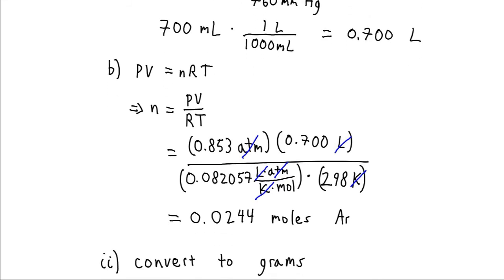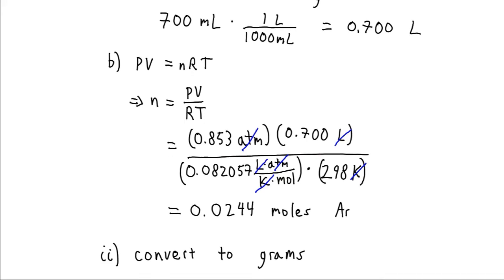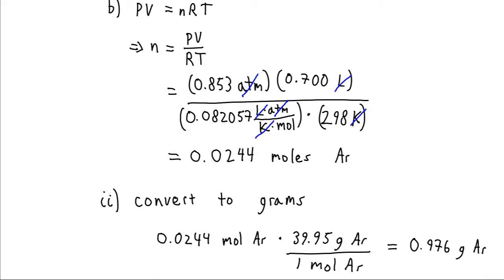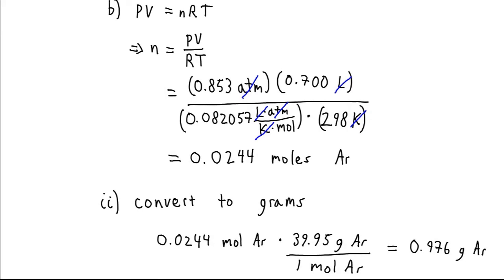Our last step: we usually like to express quantities in mass, since that's what we can actually measure. We multiply our 0.0244 moles by the atomic weight of argon from the periodic table, which is 39.95 grams per mole. Moles cancels and we get 0.976 grams of argon. So in this entire 700 milliliter flask, there's about just one gram of argon.